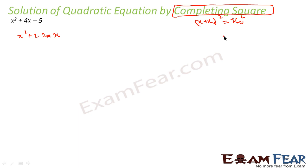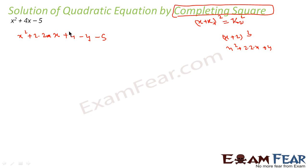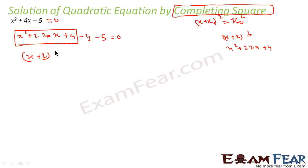Observe clearly: we know that (x + 2)² is nothing but x² + 2·2·x + 4. So if we add 4 and subtract 4, the value stays the same. With -5 already there, I've just added and subtracted 4. The advantage is that this whole thing I can now write as (x + 2)².